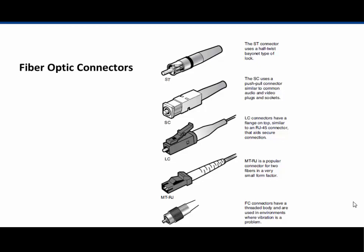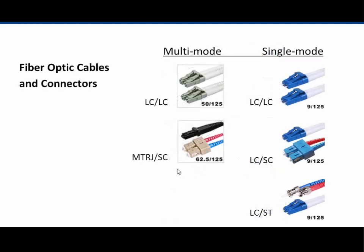Here are the different types of fiber optic connectors: ST, SC, LC, MTRJ, and FC connectors. These connectors are often found in pairs, since one fiber optic cable is used for sending and another for receiving. Here are some examples of fiber optic cable for purchase. Notice the multi-mode fiber optic cable with LC to LC connectors — LC connectors on one end and LC connectors on the other.